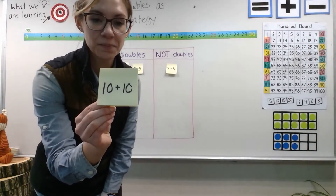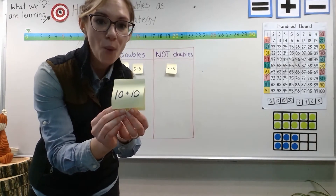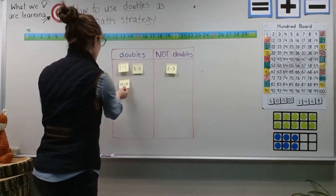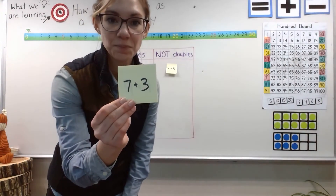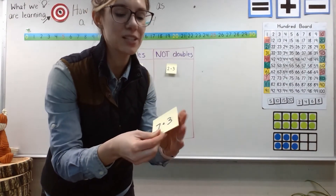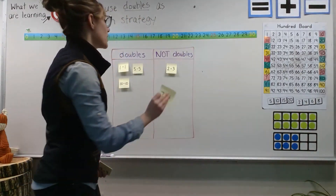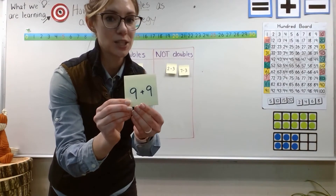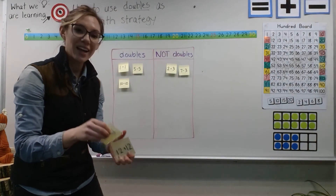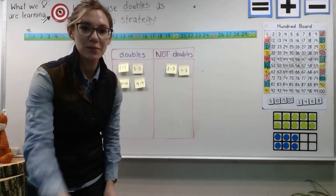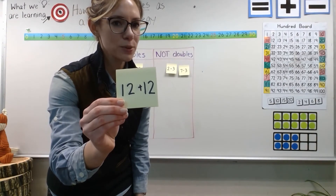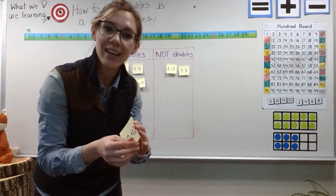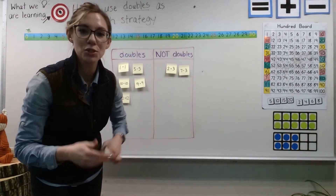How about this one? Ten plus ten — whoa, that's a big one. You're right, this is also a doubles fact: 10 plus itself, 10 plus 10. How about this one? No — seven plus three. It's not seven plus itself; it's a different number, so this one is not a doubles fact. Here comes another one: nine plus nine — doubles or not? Doubles! You're right, it's nine plus itself. Here comes another one. Tell me, is this a doubles or not? Twelve plus 12 — it's the same number, it's by itself. So 12 plus itself — that rhymes, 12 plus itself.